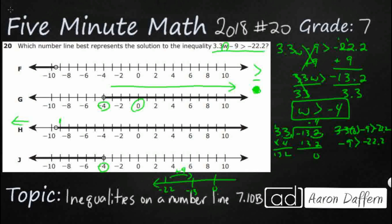Let's try one that we'd think won't work. Let's try a negative 10. So we'll do 3.3 times negative 10 minus nine is greater than negative 22.2. This should not work.